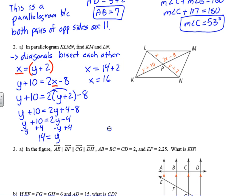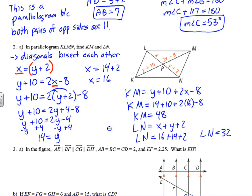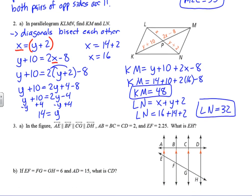KM equals (y plus 10) plus (2x minus 8). Substituting: 14 plus 10 plus 2 times 16 minus 8, which is 24 plus 32 minus 8, so KM equals 48. LN equals x plus (y plus 2), so LN is 16 plus 14 plus 2, which equals 32. The key property here is that in a parallelogram, the diagonals bisect each other.